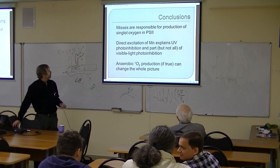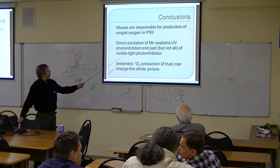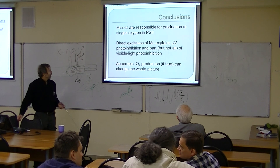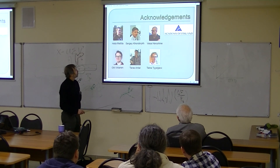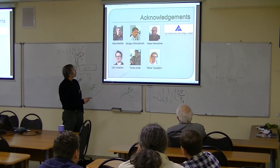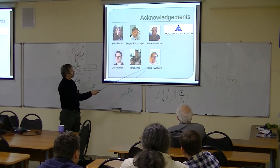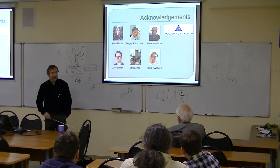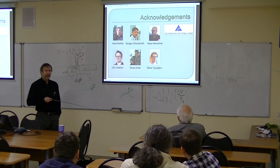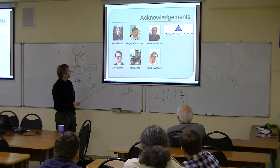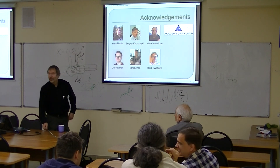Conclusions: misses are responsible for singlet oxygen production, direct excitation of manganese explains the UV part of photo-inhibition, and this last result can change everything with regard to singlet oxygen and photo-inhibition. Thank you very much for these very long seminars. These are the people involved in these studies — most of the singlet oxygen experiments — and Taras is, as you may know, a regular visitor in my lab and has worked a lot on these things as well.